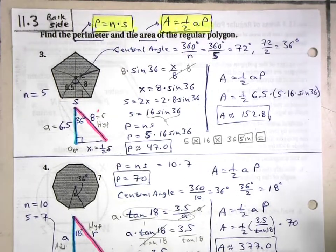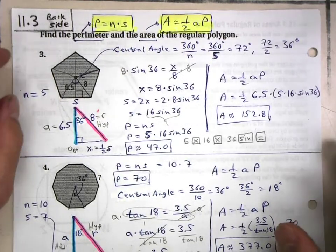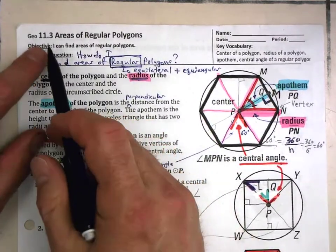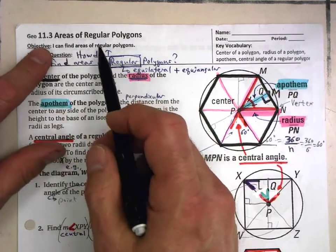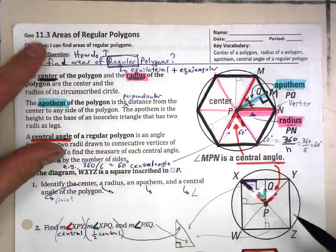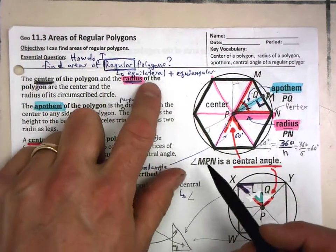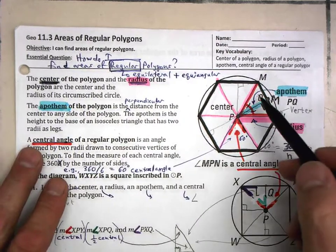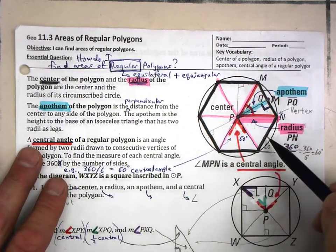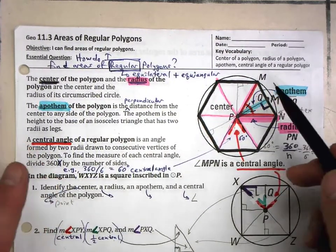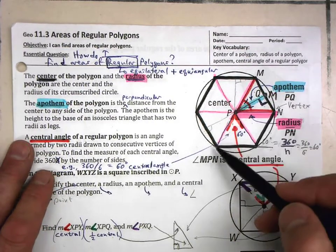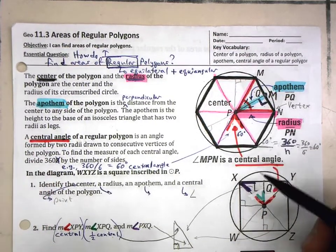Welcome to the back side of 11.3. Here's the front side. You'll remember 11.3 covers areas of regular polygons — regular meaning equilateral and equiangular. We are trying to figure out an easy way to find the area of a regular polygon.